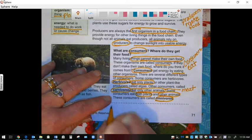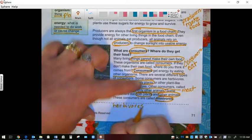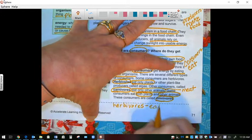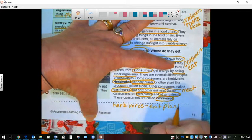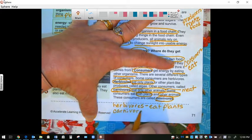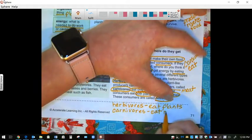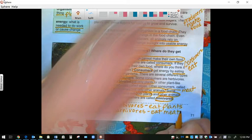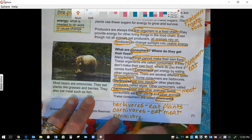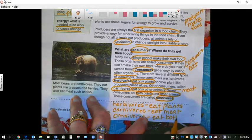So let's go ahead and write those down on the bottom. We're going to put herbivores, they eat plants. Carnivores, they eat meat. And omnivores, they eat both.